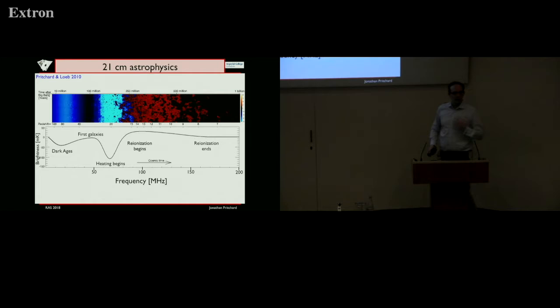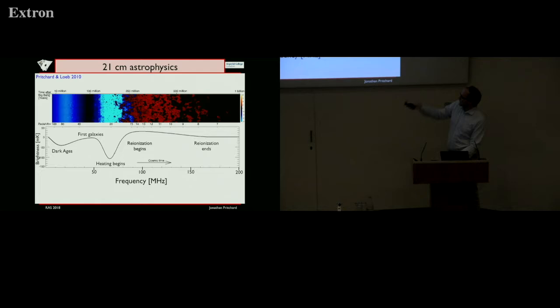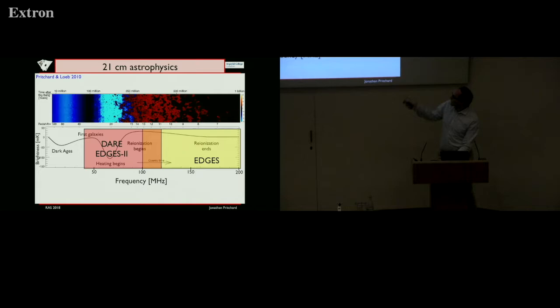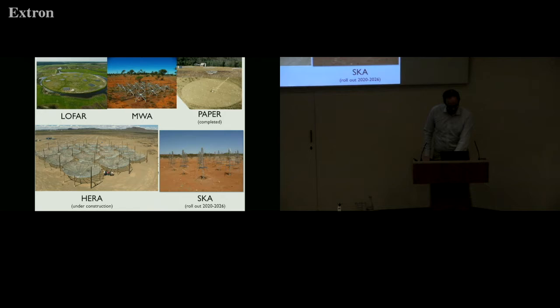This is the kind of signal we expect to see. At early times you just have density fluctuations before any galaxies. Once galaxies form, they produce Lyman-alpha photons which couple the spin temperature and gas temperature, producing a strong absorption signal — strongest if there's very little heating. Once X-ray heating begins, you move from absorption into emission, and around the same time reionization starts and the signal slowly dies away. There are two sorts of signal you can look for: this spectral distortion and maps. Different experiments are trying both — from single dipole experiments like EDGES through to LOFAR, MWA, HERA, and eventually SKA. There's a systematic path to probing this full range, including putting radio interferometers on the far side of the moon, which is everybody's favorite science case.